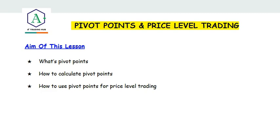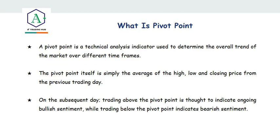The pivot point is a technical analysis indicator used to determine the overall trend of the markets over different time frames. The pivot point itself is simply the average of the high, low, and closing price from the previous trading day. On the subsequent day, trading above the pivot point is thought to indicate ongoing bullish sentiment, while trading below the pivot point indicates bearish sentiment.